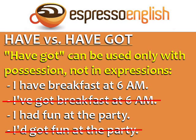Have got can only be used in the case of possession, when you own an object. You can't use have got in expressions like have breakfast or have fun, because these are not objects that you possess. For example: I have breakfast at 6 a.m. I had fun at the party.